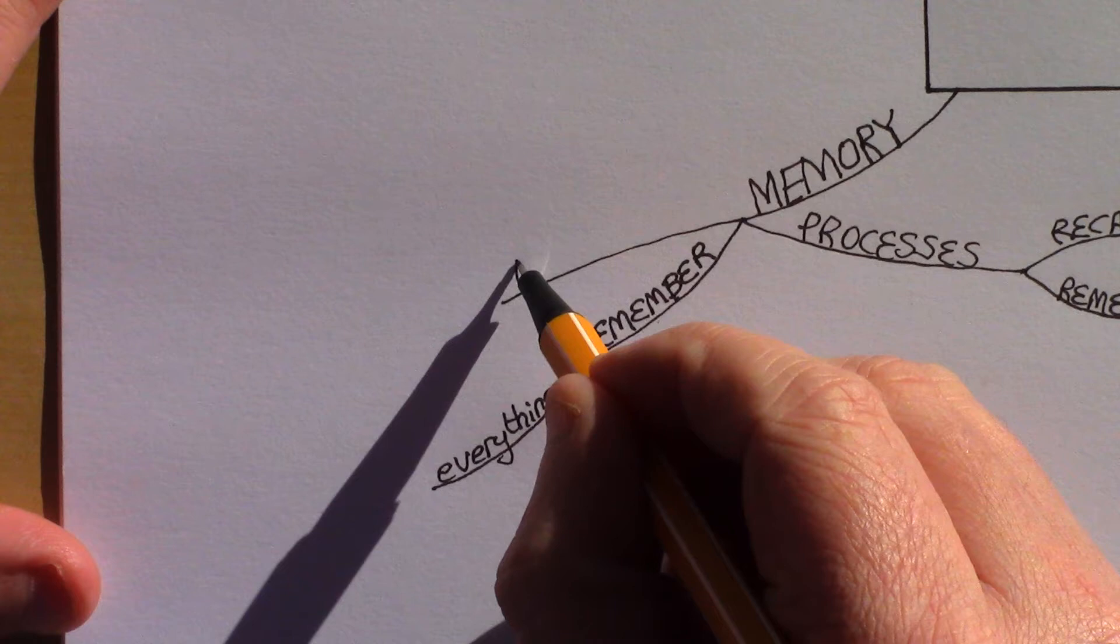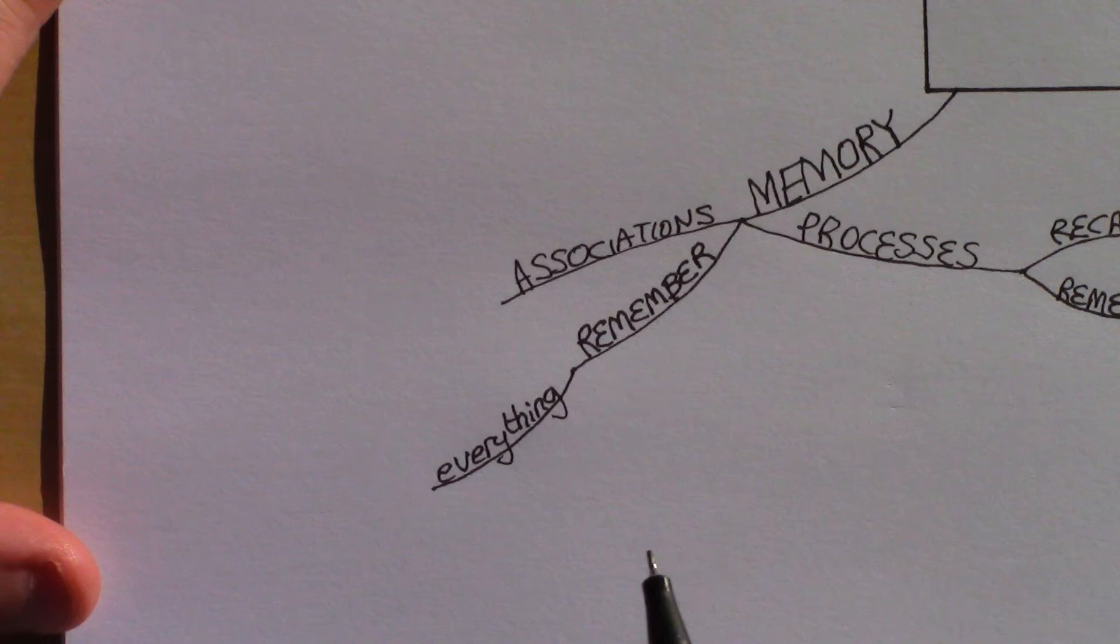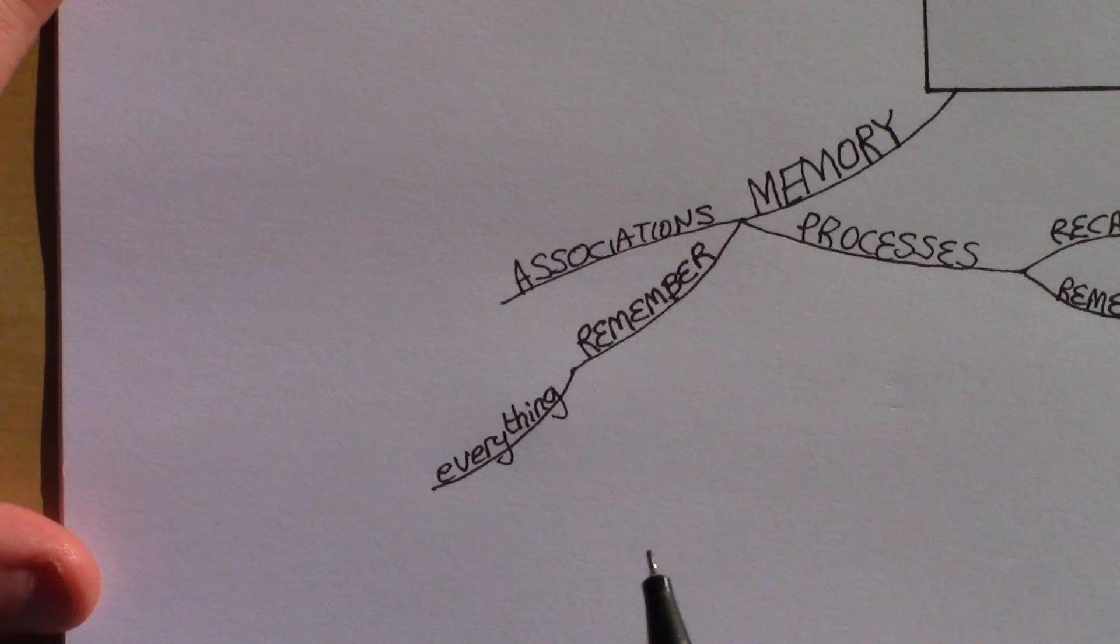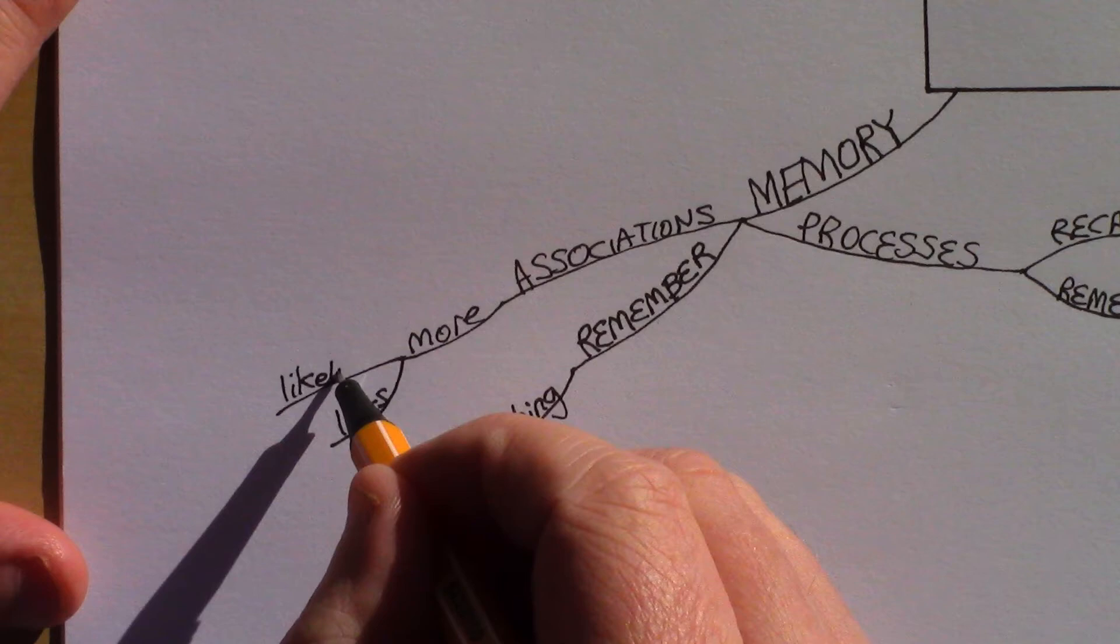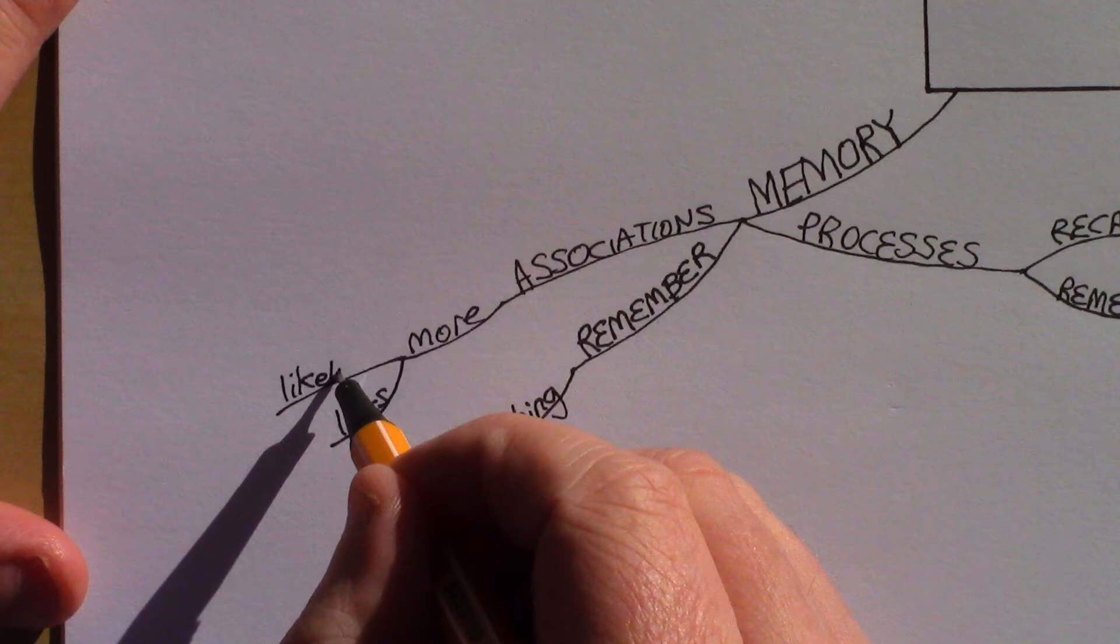Three, the brain works by association or linking or connecting things together. Thus, the more times you come across or use a piece of information, the more connections your brain will have to that piece of information, making it more likely your brain can get to that piece of information faster. And thus, that memory is more likely to be available for immediate recall.